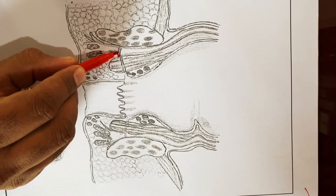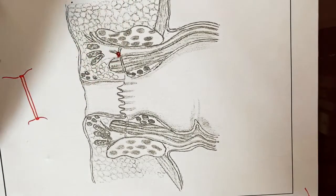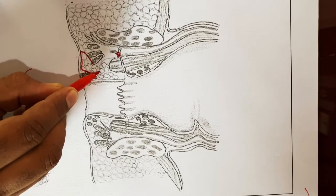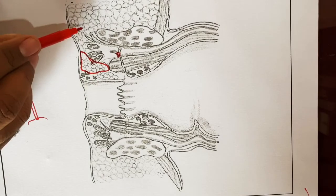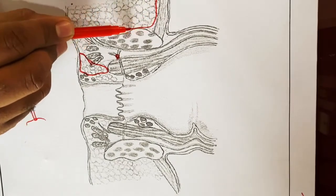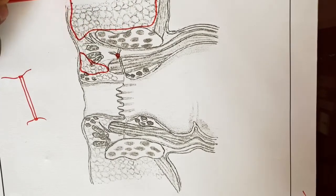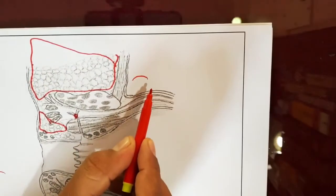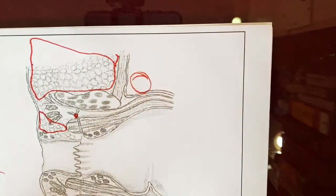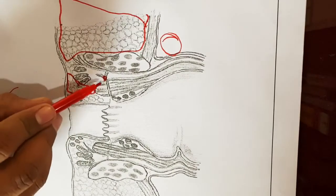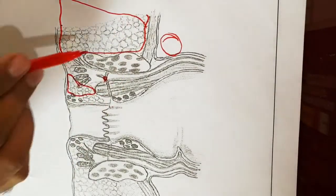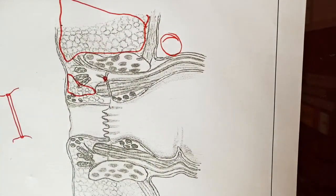Any infection here may spread into the perianal region, the ischiorectal region, or the pelvirectal region. These are called cryptoglandular infections. Based on where the infection spreads, we classify the fistula into different types.